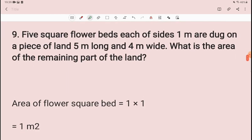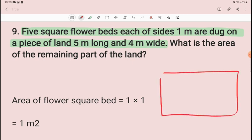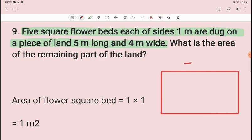Question number 9: Five square flower beds each of side 1 meter are dug on a piece of land 5 meter long and 4 meter wide. This piece of land is a big square. Length is 5 meter long and 4 meter wide. 5 meter is this and this is 4 meter. Now 5 square flower beds each of sides 1 meter are dug. So 5 square beds are dug here.